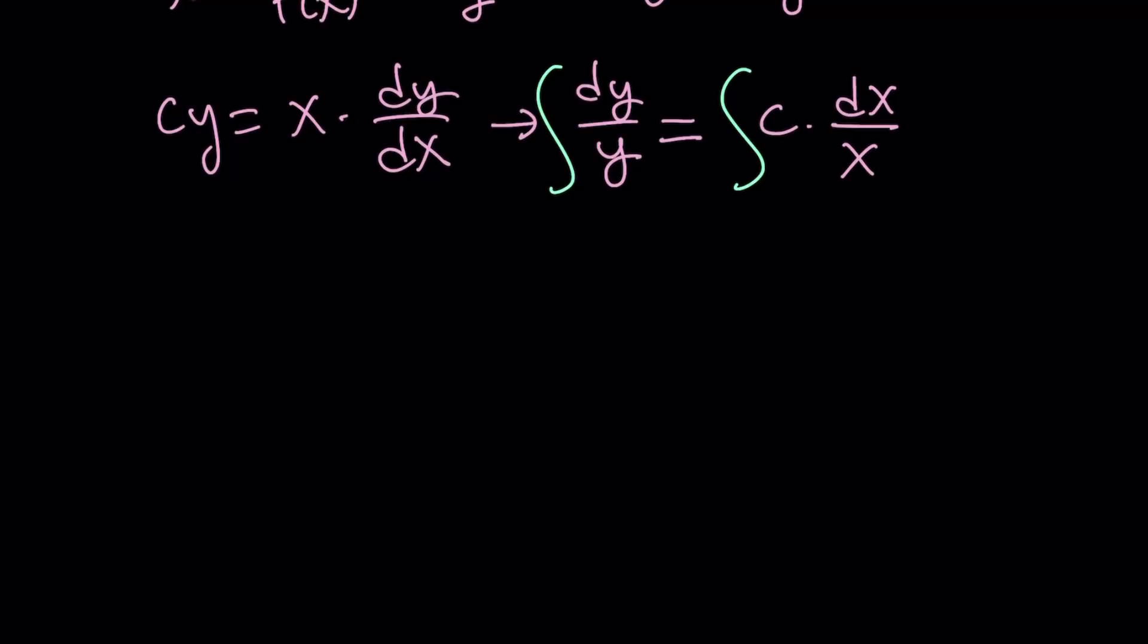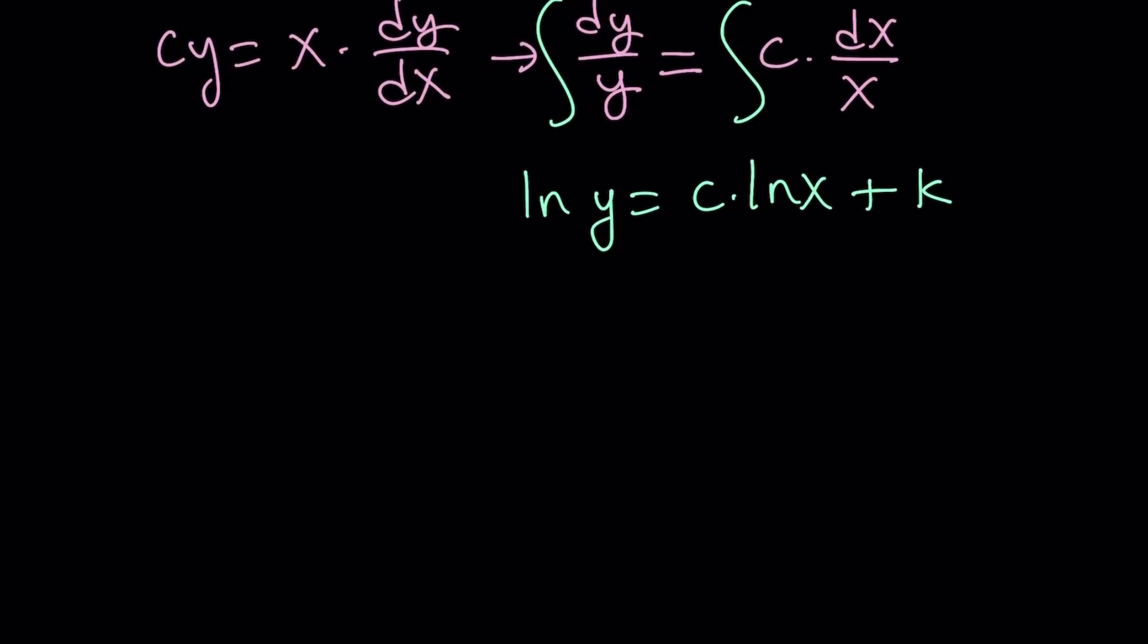Notice that the x and y values were given as positive, so when we use the ln function, we don't have to worry about the absolute value. From here, we get ln y equals c times ln x plus another constant, k.